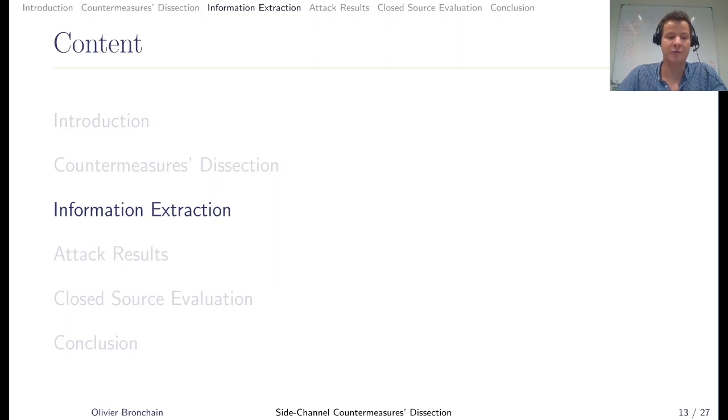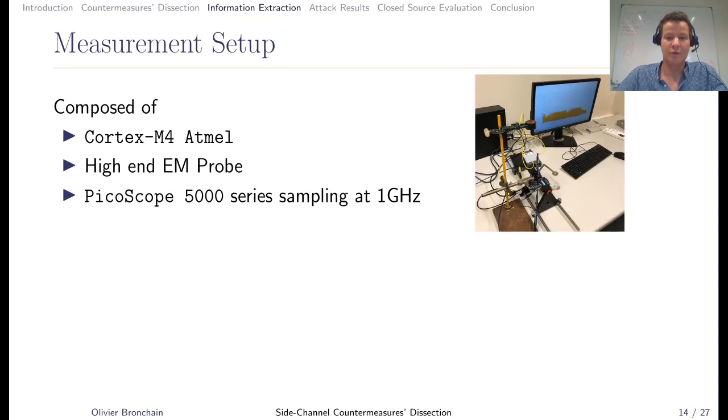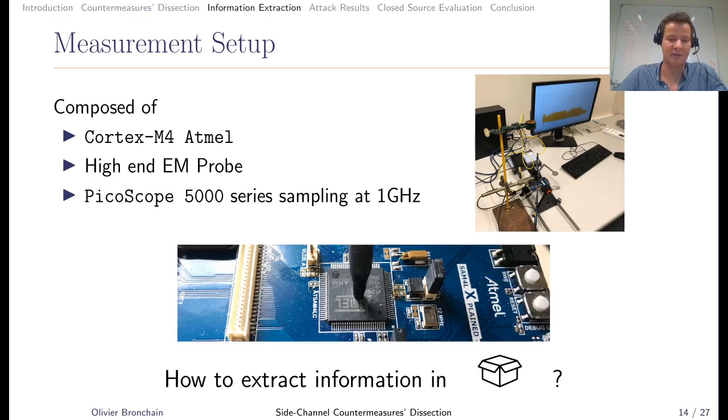Now that you have all the maths, we can try to extract information. The first thing when you want to extract information is to have a measurement setup. In this work, we used Cortex-M4 from Atmel, then we used as measurement points an EM probe, and we were using a Picoscope to sample all that at one gigahertz. You have to place everything. We placed the EM probe on top of the package. How can we extract information in that setting, taking into account that we are in an open approach.